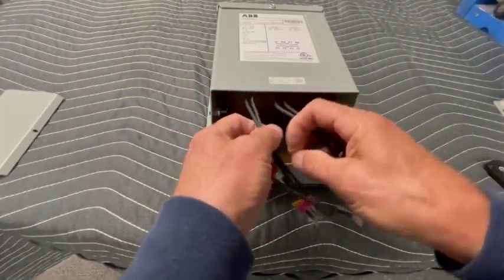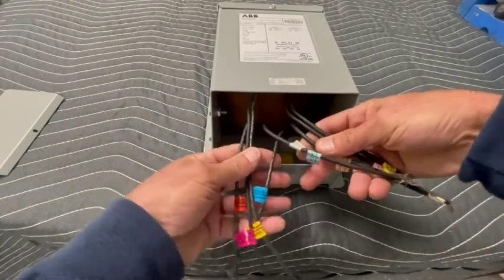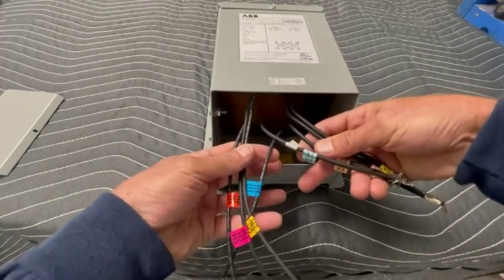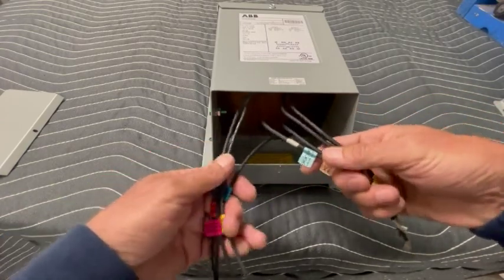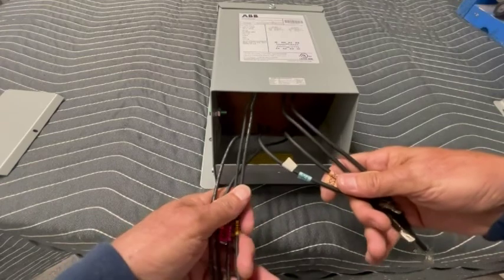Okay, you can see we have basically eight wires here. We have our H wires which are our primary coil on the transformer and we have our X wires here which would be our secondary coil on the transformer.